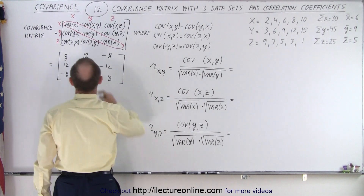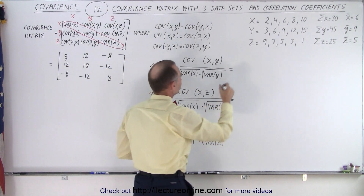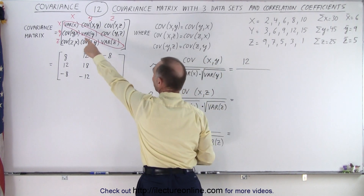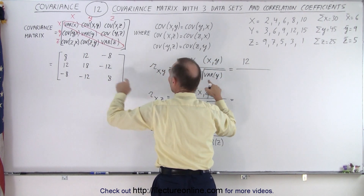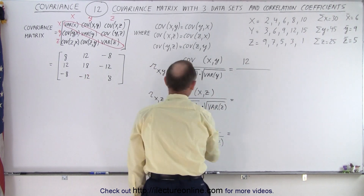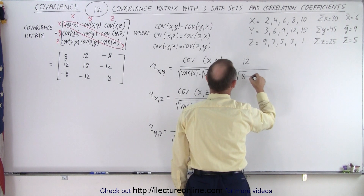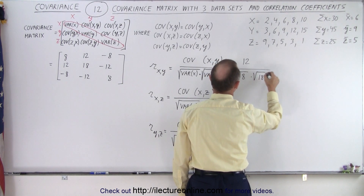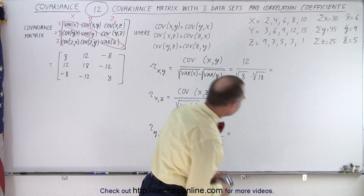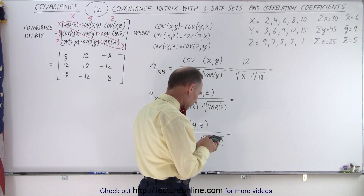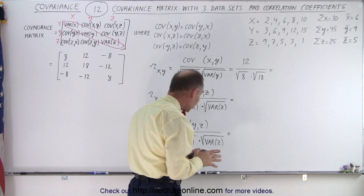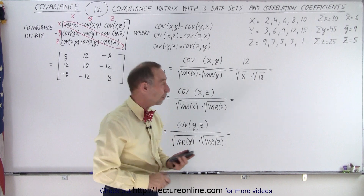So we need the covariance of x and y, which is this number right here, which is 12. And we divide that by the square root of the variance of x, which is 8, and the variance of y, which is 18. So that means the square root of 8 times the square root of 18. And we get exactly 1.